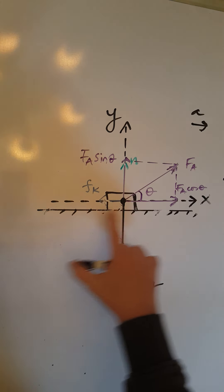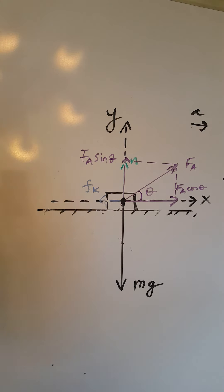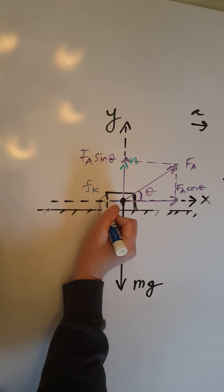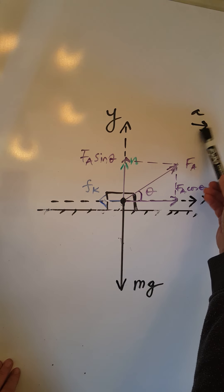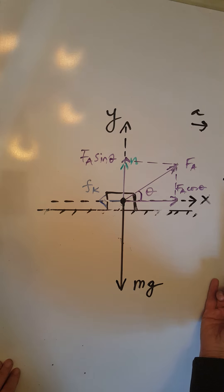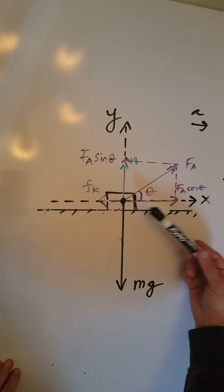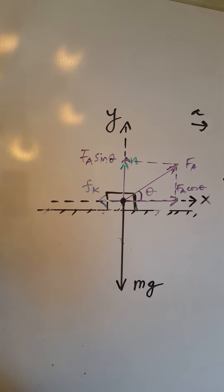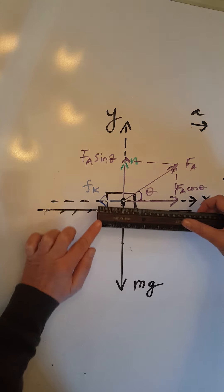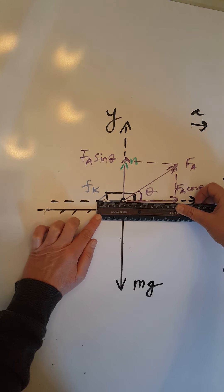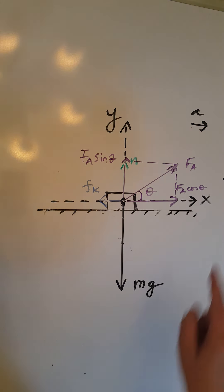Now the other forces, the horizontal forces, which are F a cosine theta and little fk, the force of friction, they have to be unbalanced because they must give me a net force in the same direction as the acceleration. The acceleration is to the right. So the net force must be to the right. Therefore, F a cosine theta must be greater than Fk. And indeed, it is because if you measure them, you're going to see F a cosine theta is 10 centimeters, while Fk is only four and a half. So therefore, they are unbalanced in the favor of F a cosine theta.